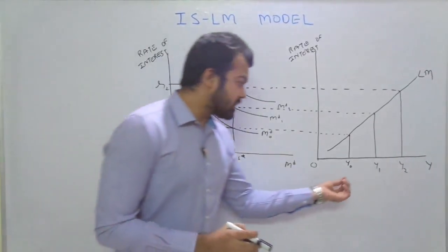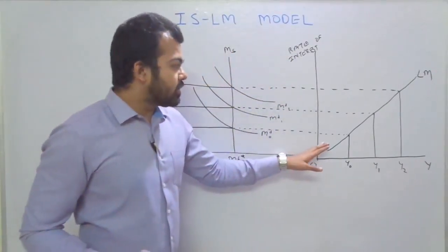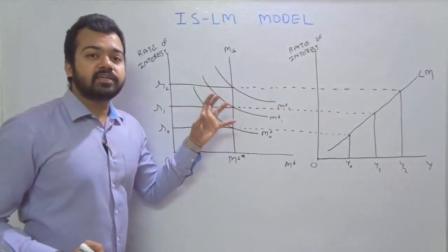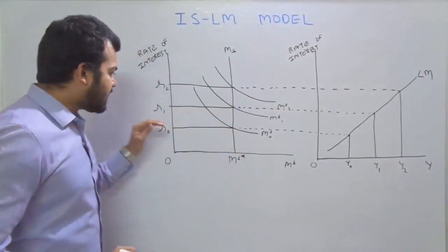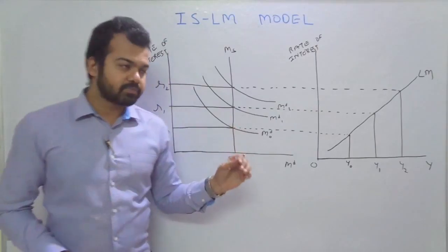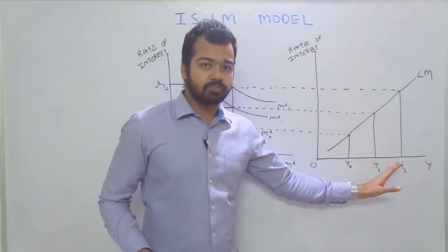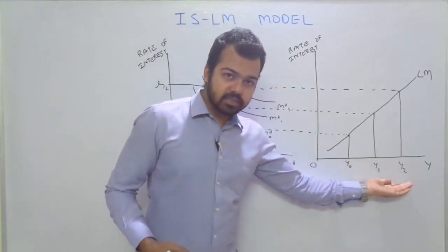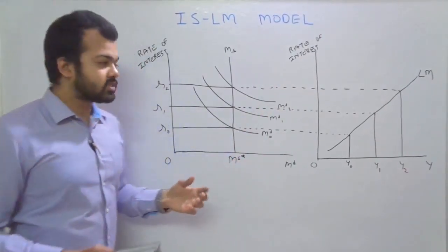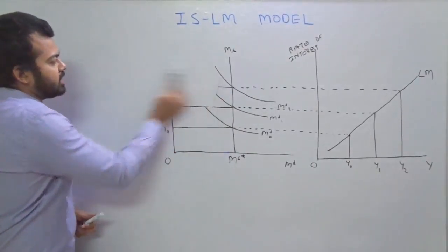Whenever income increases from y0 to y1 to y2, money demand also increases, creating a temporary disequilibrium in the money market. That is why the central authority will also increase the rate of interest. This is the simple concept of the LM curve — it shows the relationship between income and rate of interest. As your income increases, your money demand also increases in order to spend on goods and services, and that is why the rate of interest also rises.